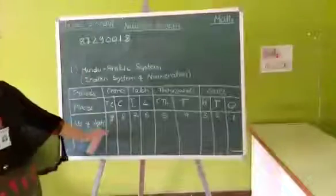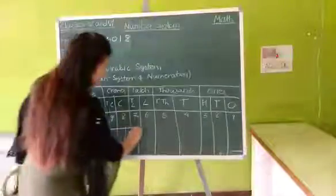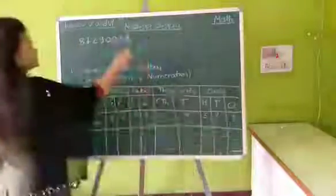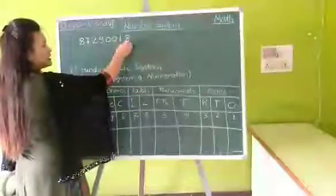If you have to write this example into the place pattern system, how will you write? Starting from the right side because eight is ones.